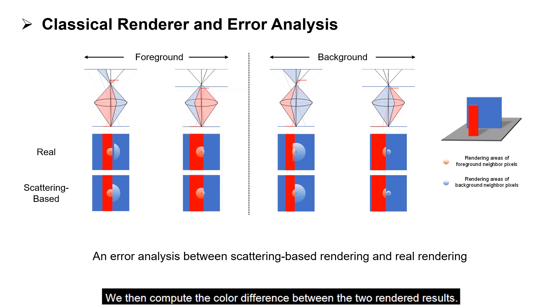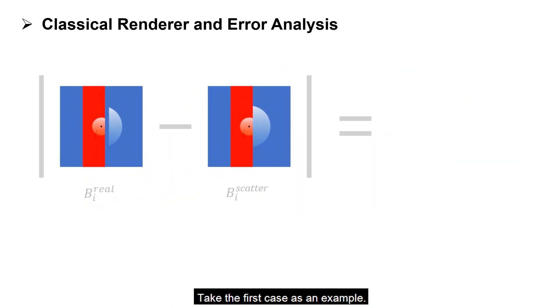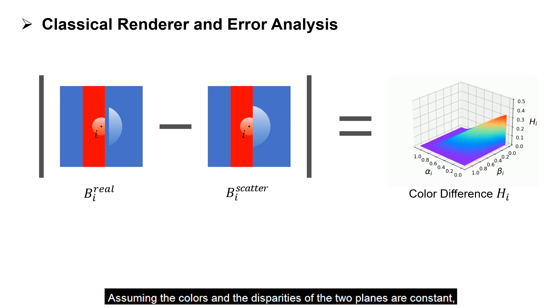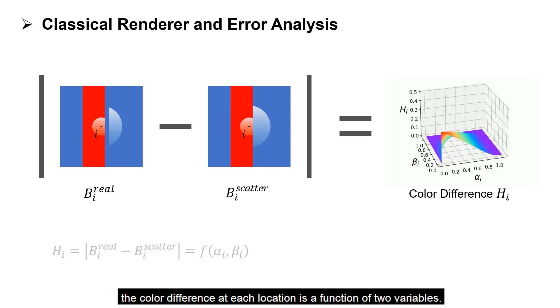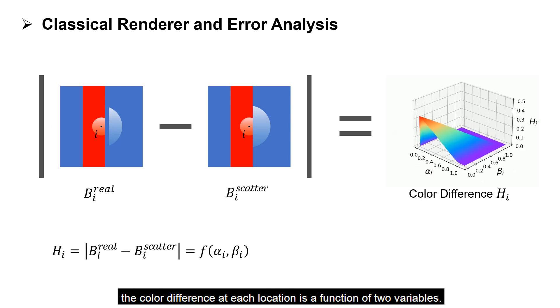We then compute the color difference between the two rendered results. Take the first case as an example. Assuming the colors and the disparities of the two planes are constant, the color difference at each location is a function of two variables.